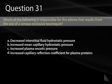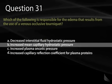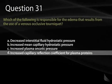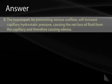Question 31. Which of the following is responsible for the edema resulting from use of a venous occlusive tourniquet? A, decreased interstitial fluid hydrostatic pressure. B, increased mean capillary hydrostatic pressure. C, increased plasma oncotic pressure. Or D, increased capillary reflection coefficient for plasma proteins? A venous occlusive tourniquet impairs venous outflow from the limb, increasing hydrostatic pressure inside capillaries — making veins more visible. If left on too long, edema results from the increased capillary hydrostatic pressure (Pc). The correct answer is B.